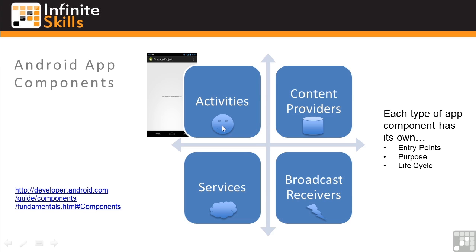This might mean displaying information, images, audio, video, whatever it takes. The purpose of content providers is to deal with data — it's a way for one app to supply other apps with information. The purpose of broadcast receivers is to respond to events. For example, a broadcast receiver might be triggered by a low battery condition. And services operate in the background to do things like periodic backups.